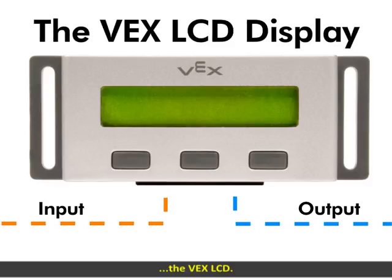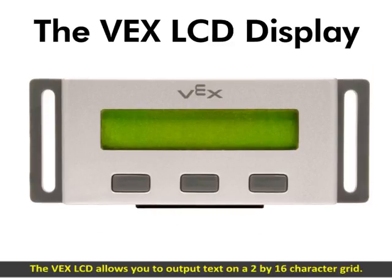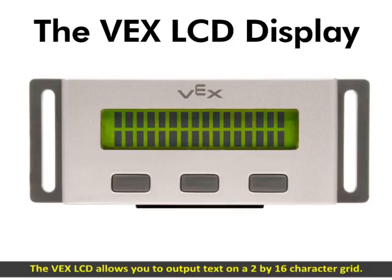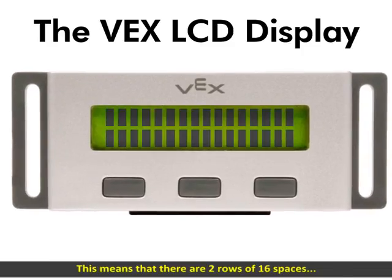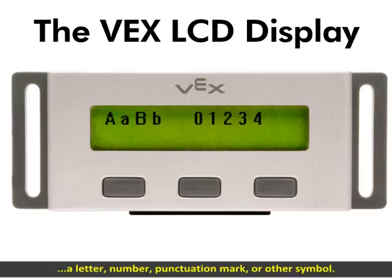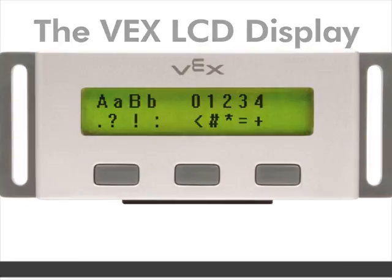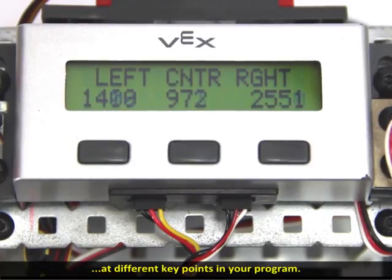The VEX LCD allows you to output text on a 2x16 character grid. This means that there are two rows of 16 spaces, each of which can be used to display a single character — a letter, number, punctuation mark, or other symbol. This is extremely useful for outputting messages or sensor values at different key points in your program.